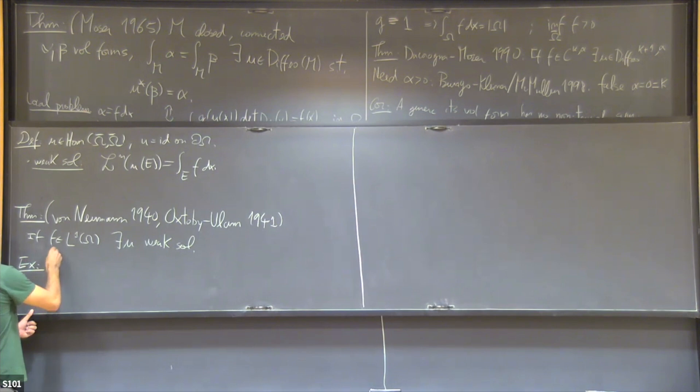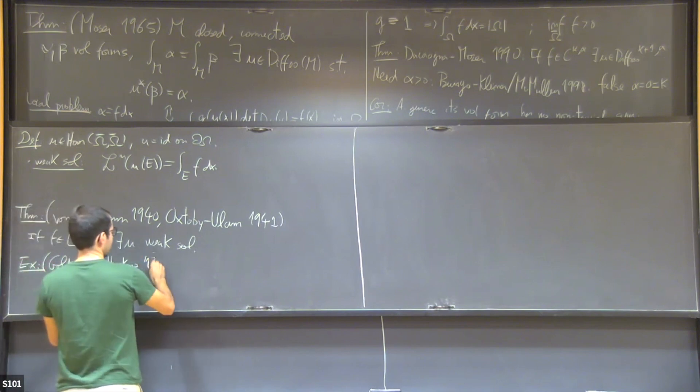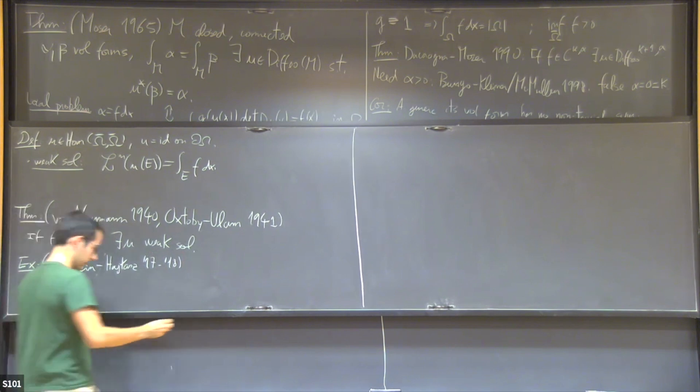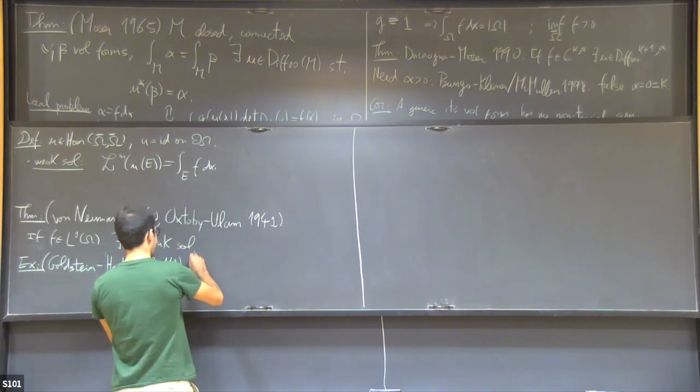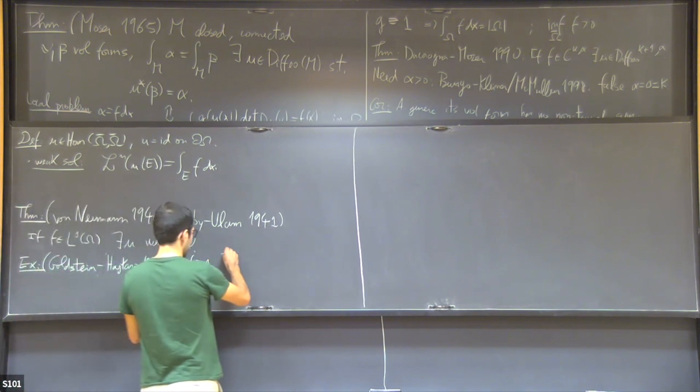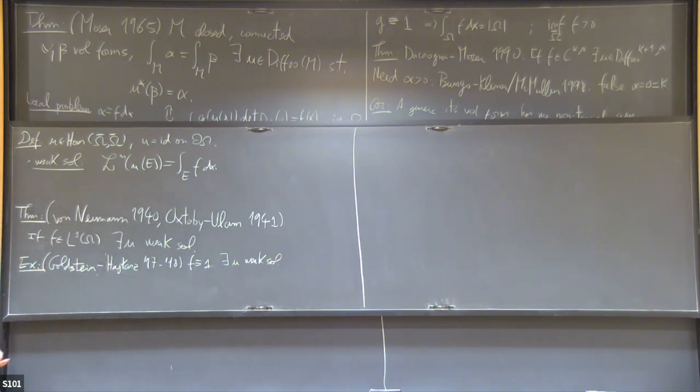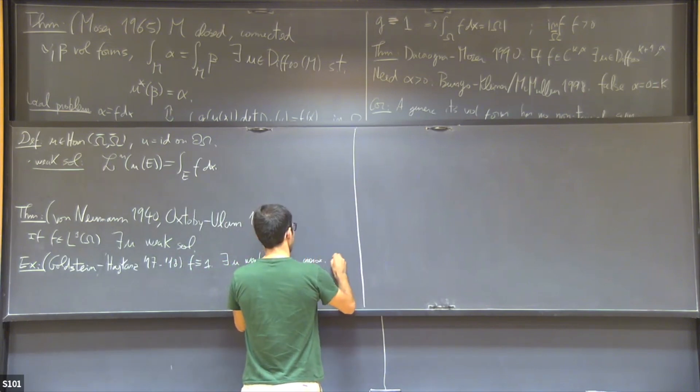Here's an example. This example is due to Goldstein and Iwaniec in 2017 and 18. Let's take f to be one. This is the simplest possible case. It's the incompressible or the area-preserving case. Then they show that there is u, a weak solution. By the way, weak solutions are the identity on the boundary and they are homeomorphisms. So they are orientation-preserving in the topological sense.